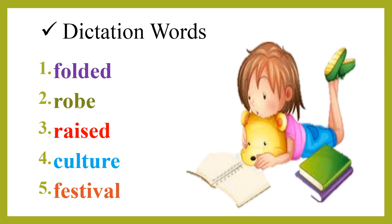Here I have some dictation words. Look at the dictation words. The first word is folded. The second word is robe — robe is a kind of dress. Number 3 is raised. Number 4 is culture. And the last fifth word is festival.